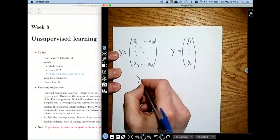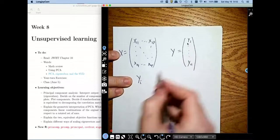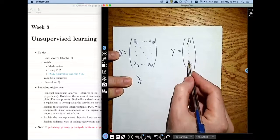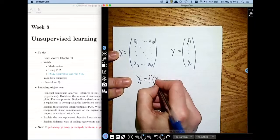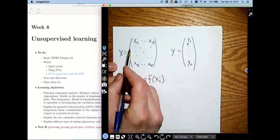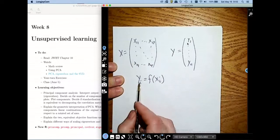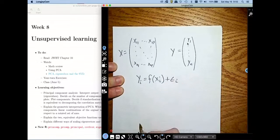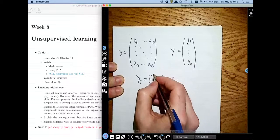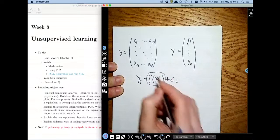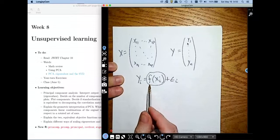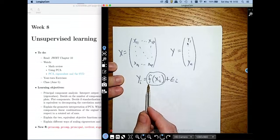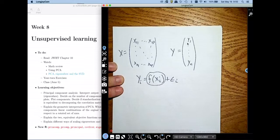In the first seven weeks of this class we've studied the following problem. Each of my y values, y sub i, is some function of the corresponding row vector plus some errors. My goal has been to estimate this function f. We've done that with linear functions, trees, smoothers - we've tried a lot of different things. That's the supervised learning problem.